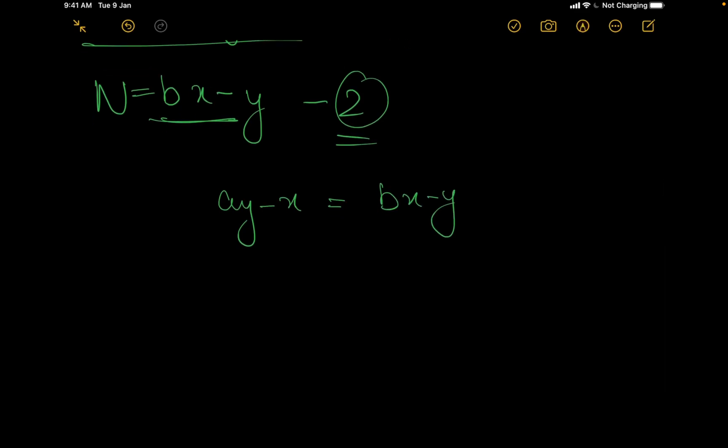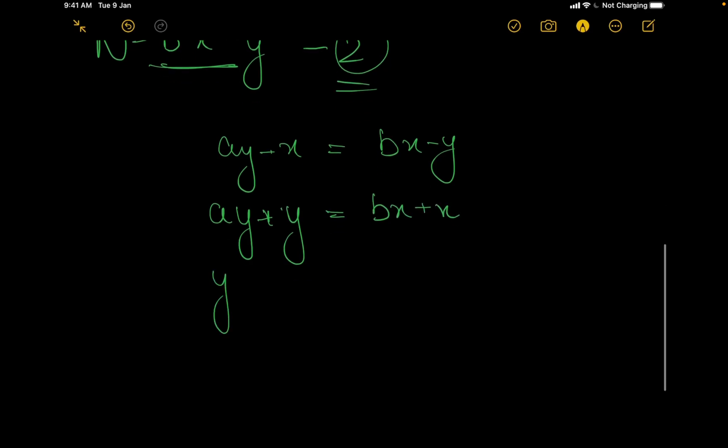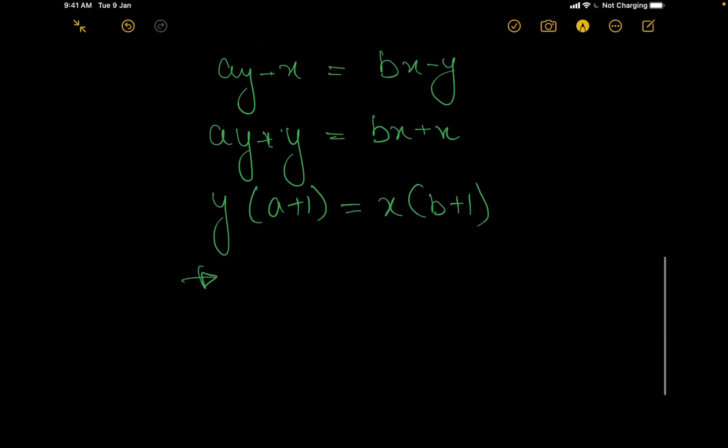Then if we rearrange them, ay minus ay plus y, so bx plus x. We can take y common from here. It would become a plus 1. We can take x common from there. It would become b plus 1. And we will get a plus 1 by b plus 1 equal to x by y.